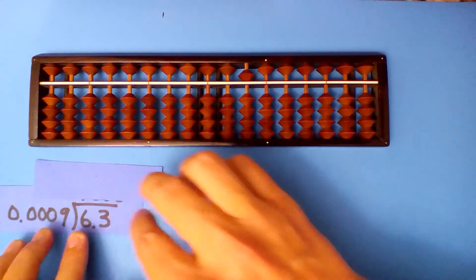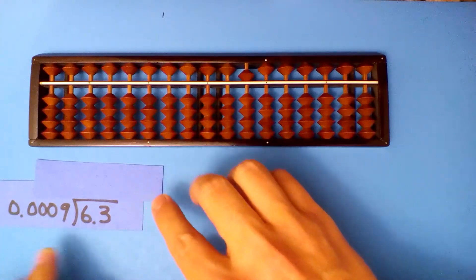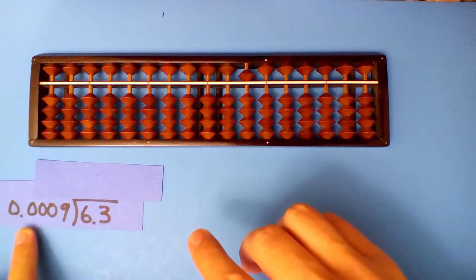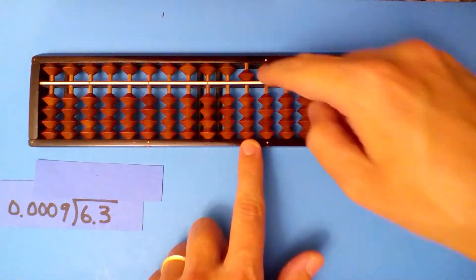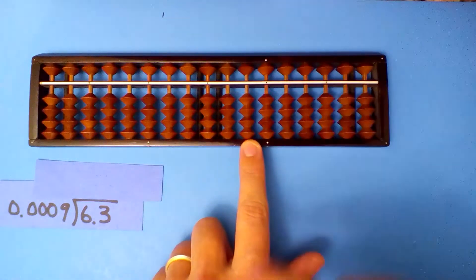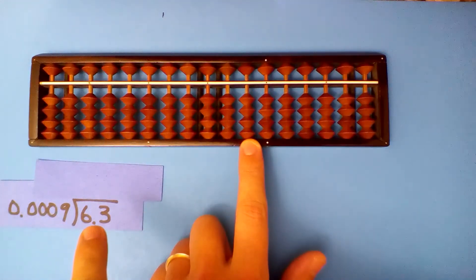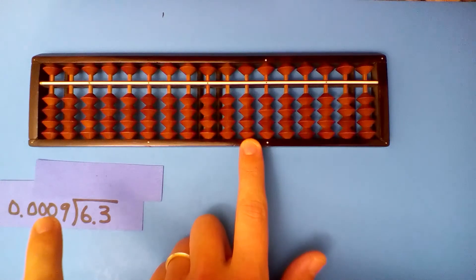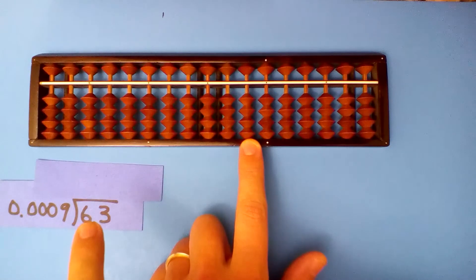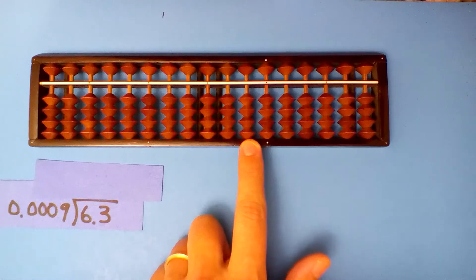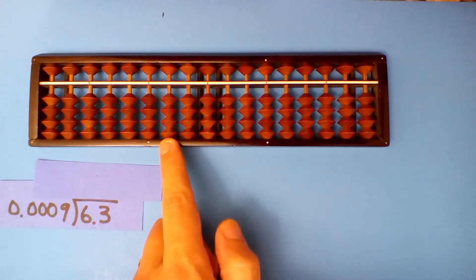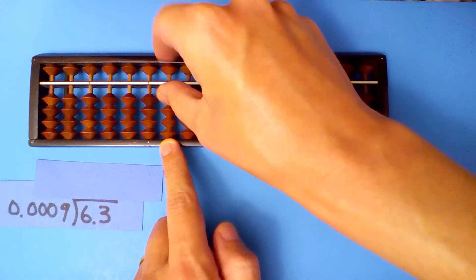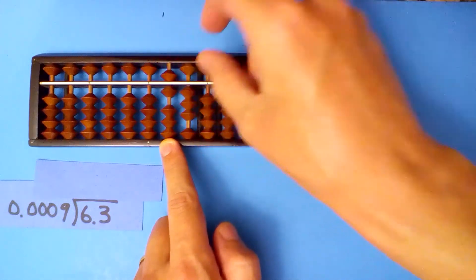What is 6.3 divided by 0.0009? Start on the hundredths — one digit minus three digits, for a total of four more digits in the dividend: one, two, three, four. Set up our dividend: six, three.